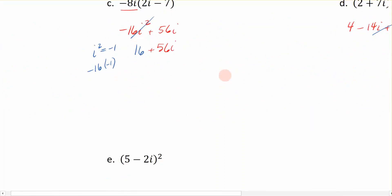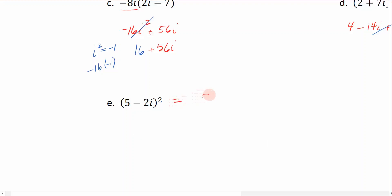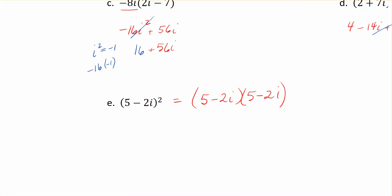Now we're going to try one more example: 5 minus 2i, quantity squared. You may remember that 5 minus 2i squared is the same thing as 5 minus 2i times 5 minus 2i. We could do FOIL just like in the previous example, and I encourage you to try that on your own. However, because I use this technique a lot in teaching, I'm going to show you a different technique for this special type of binomial — the same term squared, or the same term multiplied by itself twice.